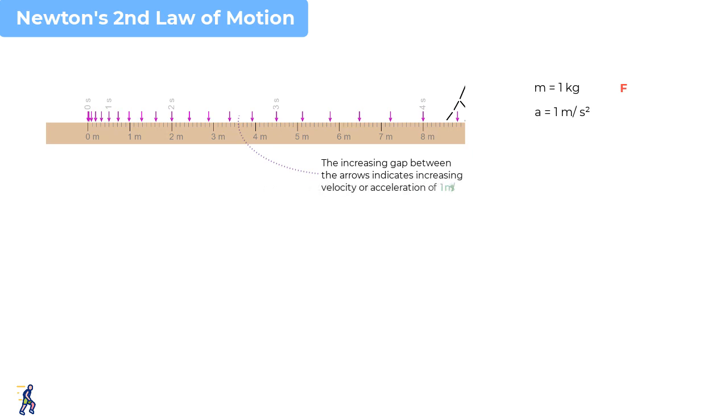what you find is that the body is accelerating at 1 meter per second squared. Then we can define the applied force as 1 Newton. So what we are saying is that if we can make a body of 1 kilogram accelerate by 1 meter per second squared, then the force acting on it must be 1 Newton.